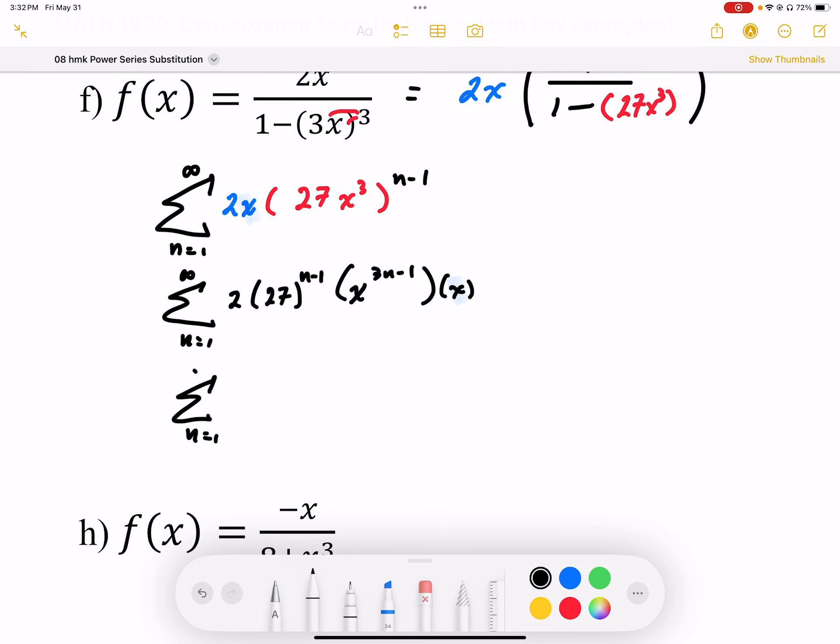I end up with n equals 1 to infinity, 27 to the power of n minus 1, and then this becomes x to the power of 3n. Sorry, this should have been minus 3 up here. This should be 3n minus 2 when we combine that together.